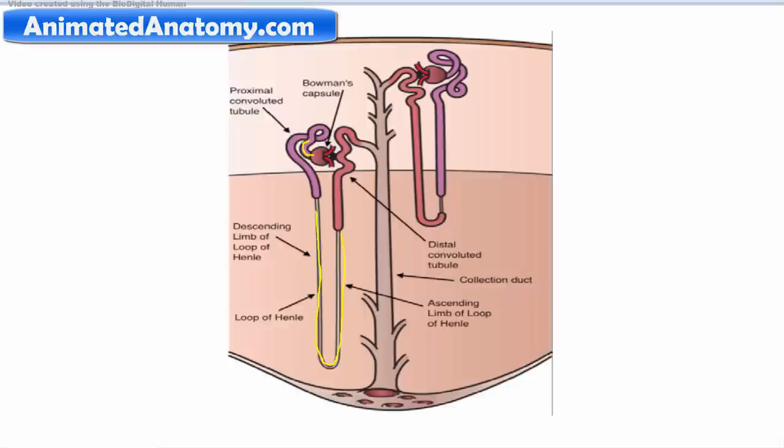And then what's filtered out of the blood goes here through the proximal convoluted tubule and it goes down to the loop of Henle.